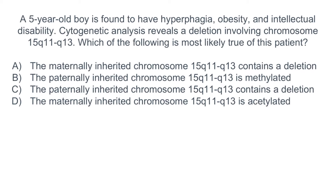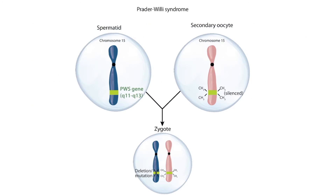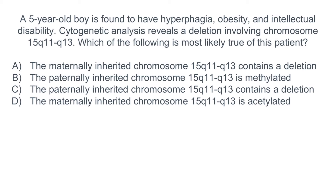Hopefully from the question stem you notice that this boy's presentation is consistent with Prader-Willi syndrome. We can deduce this because he has hyperphagia, obesity, intellectual disability, and a deletion involving chromosome 15Q11 to Q13. The correct answer is C: the paternally inherited chromosome 15Q11 to Q13 contains a deletion. Prader-Willi syndrome is caused by a mutation or deletion of the paternal PWS gene. B is incorrect because the maternal chromosome is methylated, resulting in a silenced PWS gene. D is incorrect because acetylation of this region would result in gene activation, not silencing.